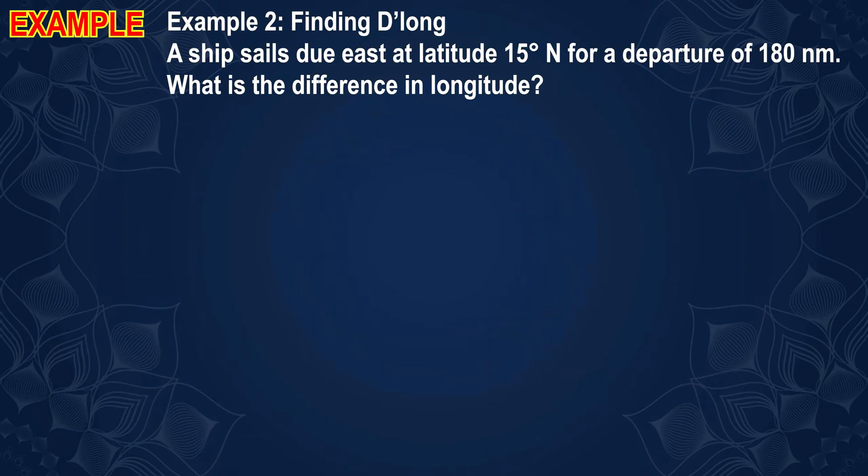Example 2: Finding D'long. A ship sails due east at latitude 15 degrees north, covering a departure of 180 nautical miles. We need to find the difference in longitude.